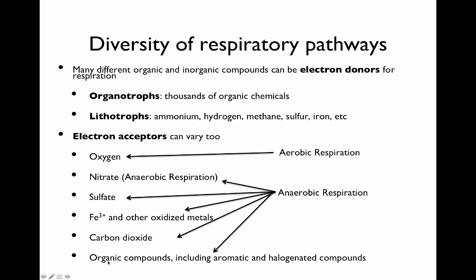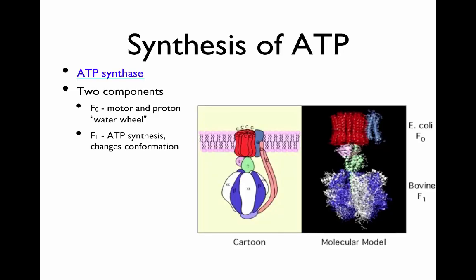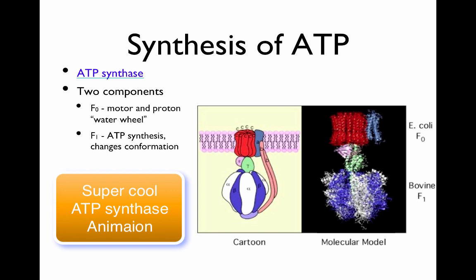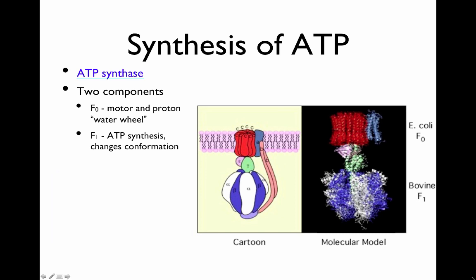The proton gradient that we've generated can be used to do work — for instance, to help transport molecules across the membrane and for motility, helping rotate the flagella. However, you also need chemical energy in the form of ATP. An enzyme in the membrane, ATP synthase, can convert that proton gradient into ATP. It has two components: the F0 motor, which works like a water wheel and turns around, and the F1, which is the ATP synthase itself. There's a really nice video on YouTube demonstrating this, and a link will be provided — go watch it and come back. This is how protons are converted into ATP.